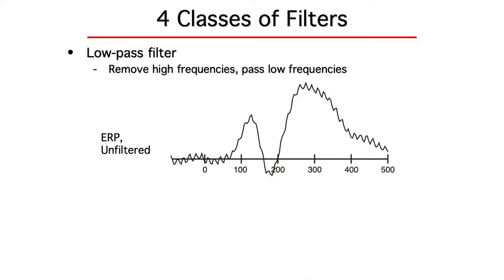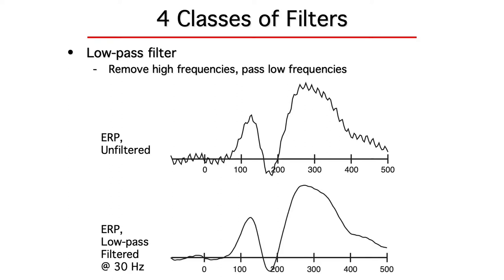Here's an ERP waveform that's contaminated with 60Hz noise from the electrical devices in the recording environment. And here's the same waveform after we've filtered out everything above about 30Hz. You can see that the waveform is basically the same, but the high-frequency ripples are now gone.